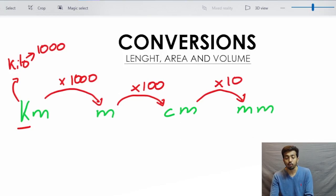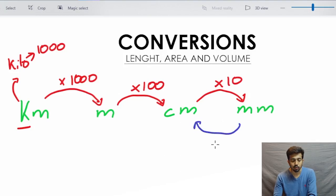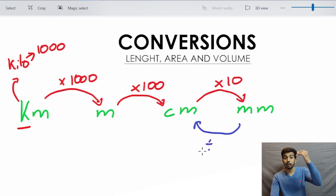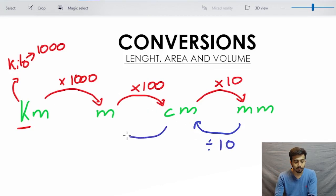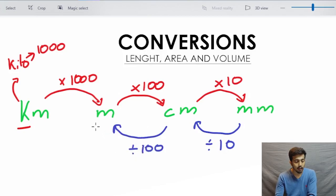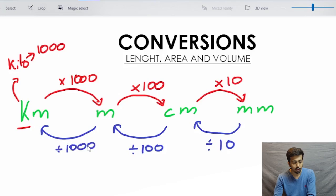But what if we need to go back — all the way from millimeters to kilometers? Everything remains the same, just the multiplication sign changes to a division sign. So instead of multiplying, we divide by 10 to go from millimeter to centimeter, divide by 100 from centimeter to meter, and divide by 1000 from meter to kilometer. I normally call this a conversion chain. I hope this helps.